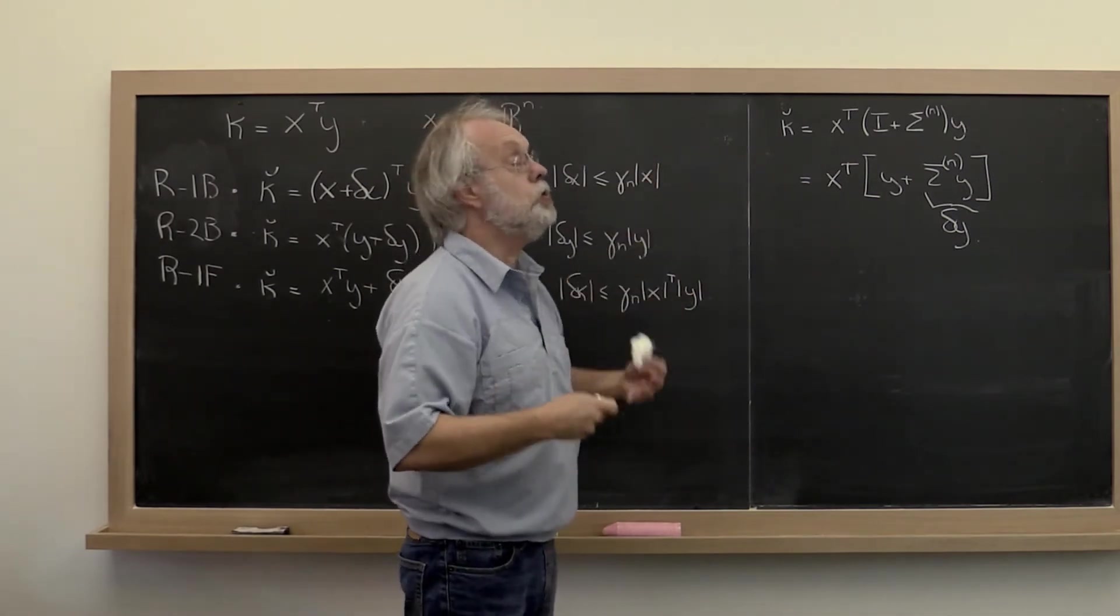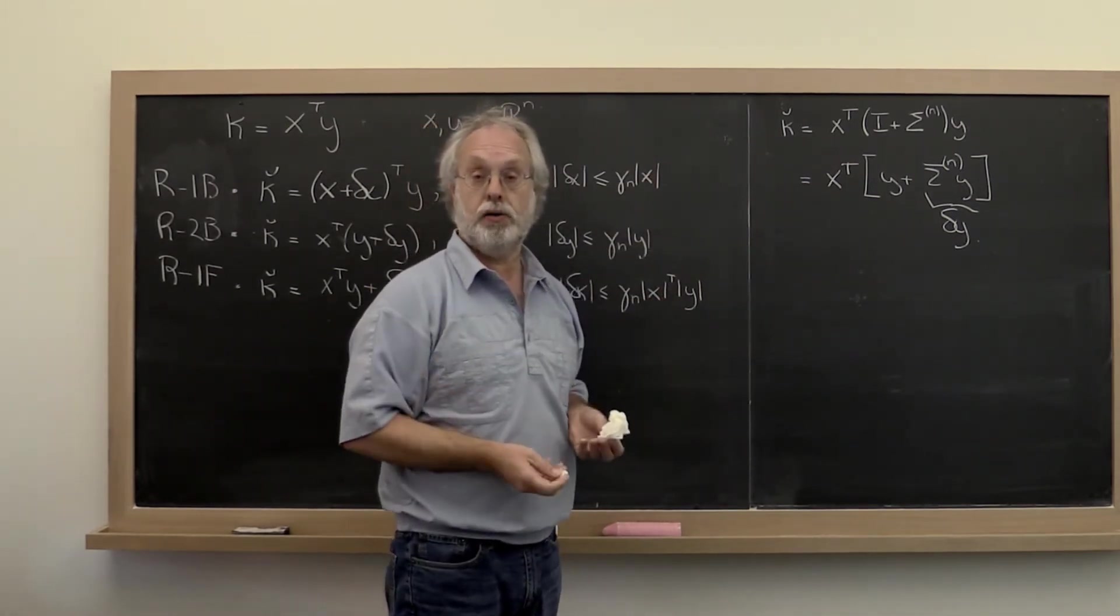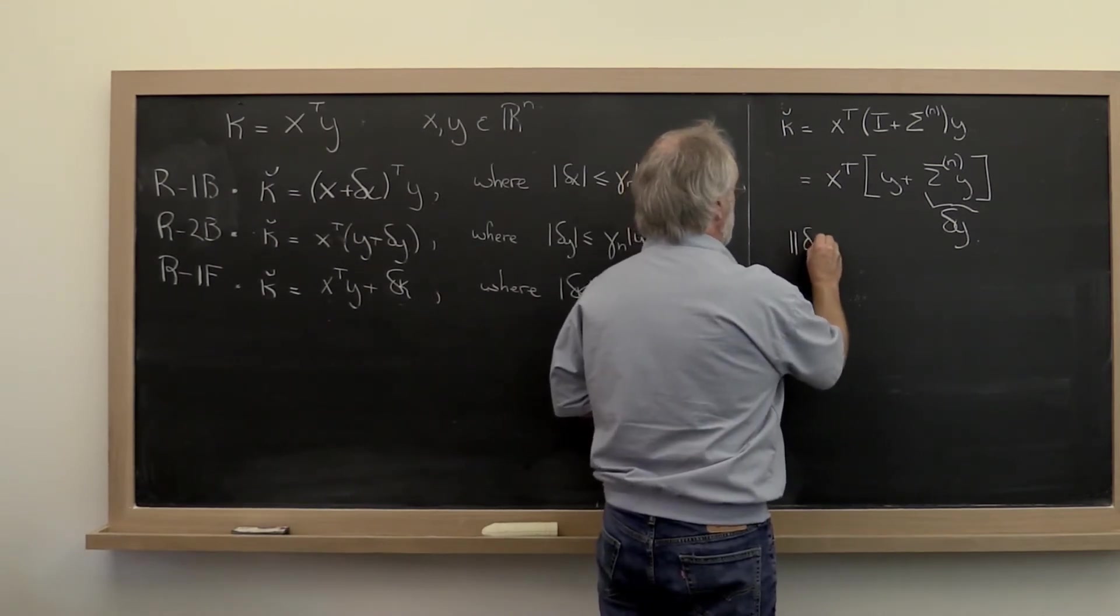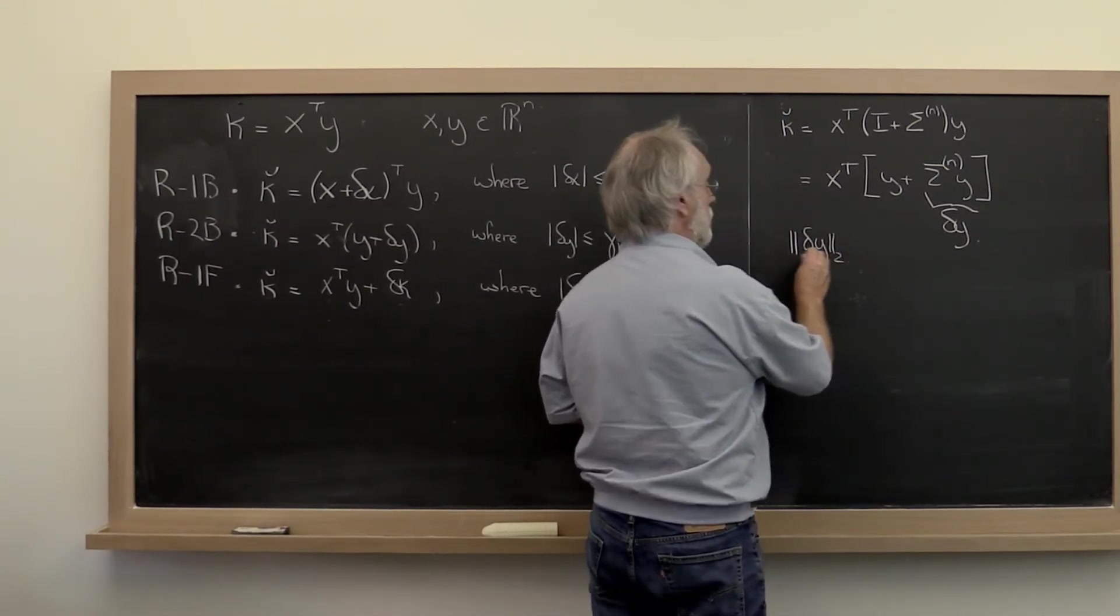We could then say, okay, well let's use what we learned about norms to put some bounds on this. And the bound then would be that, for example, the 2-norm of this changed vector is bounded by...